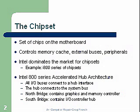The chipset, a set of chips on the motherboard, controls the memory cache in external buses and peripherals. Intel dominates the market for chipsets. The reason they dominate is they also dominate the CPUs or processors, and they've gotten into motherboard manufacturing and consequently have a domination of chipsets. Examples are the i800 series of chipsets and their newer ones — Intel 800 and the 900s — series accelerated hub architecture.